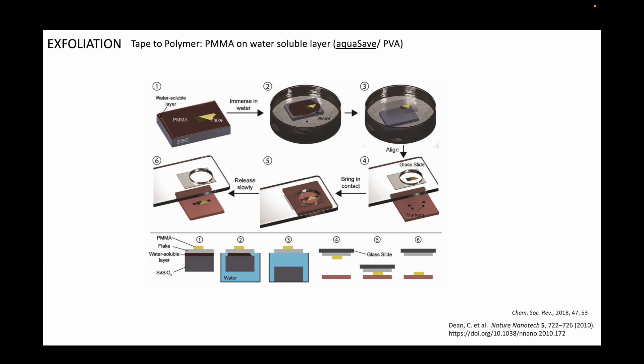Once the exfoliation onto PMMA is successful and a viable flake is identified, the substrate is let go in a water bath. Then water seeps in between the PMMA and the substrate, dissolving away the AquaSave or equivalent polymer layer. The relatively less dense PMMA film is then left afloat on water, which can then be scooped up with a glass slide with a hole drilled through, and this flake can then be deterministically transferred using micromanipulators. This was the first method used to make heterostructures of graphene and hBN.